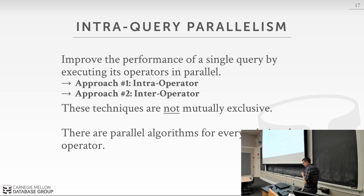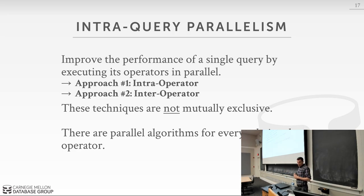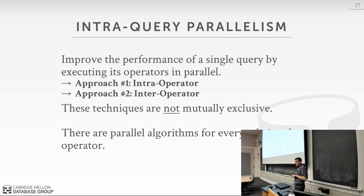For intraquery parallelism, the idea is that for a single query we break its tasks into subtasks and run them in parallel. The two approaches are intraoperator parallelism and interoperator parallelism — these are not mutually exclusive, but most systems use only the first. All the algorithms we've talked about — joins, sorting, scans — have parallel versions. For a hash join, instead of one thread scanning and building a hash table, you could have multiple threads scanning simultaneously and building the hash table together, though now you need latches to protect them.